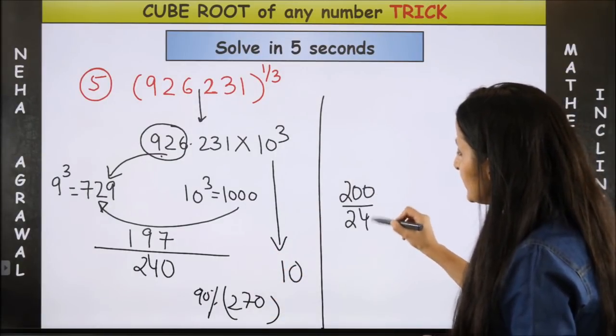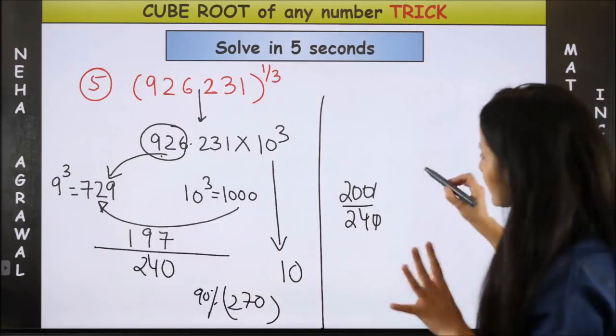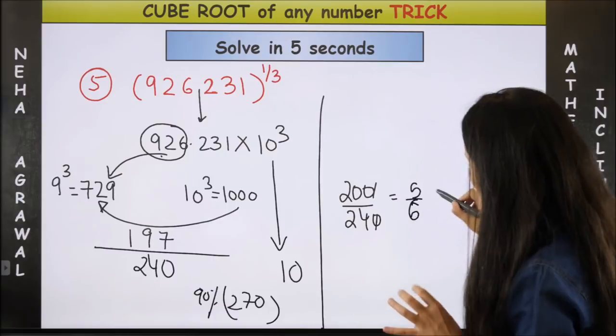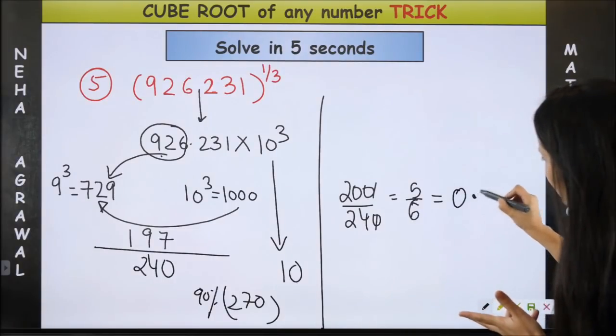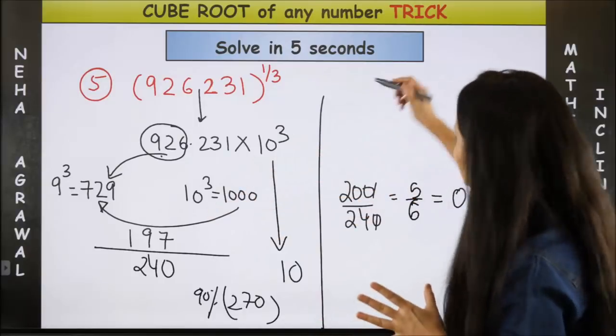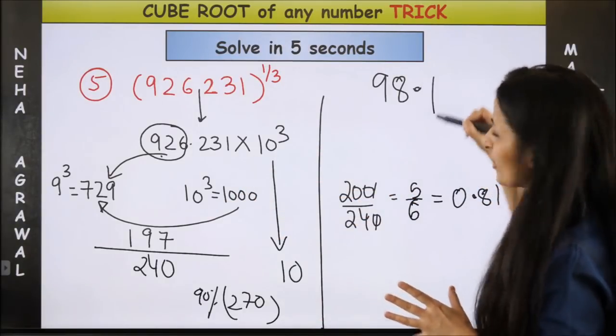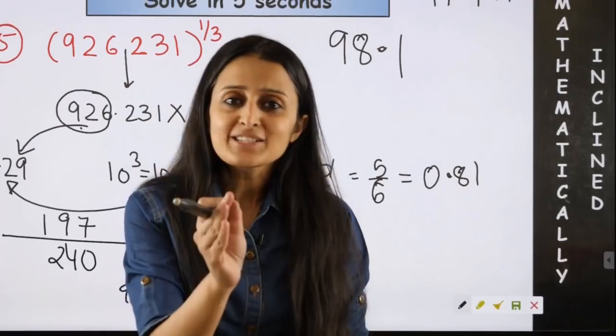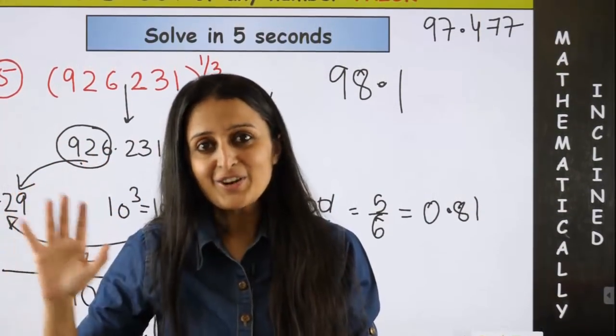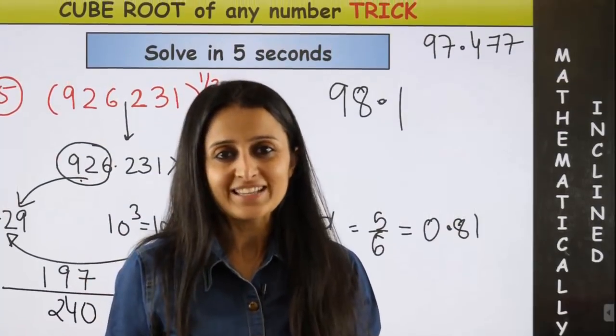So for better calculations I can change it to 200 upon 240. So that means roughly I will get 5 by 6, which is going to give me 0.81 something. So that means my final answer is going to be 98.1 something. Trust me, guys, with a lot of practice you can definitely solve these questions within 5 seconds.